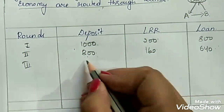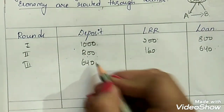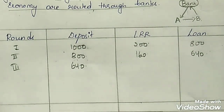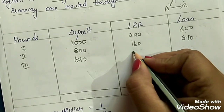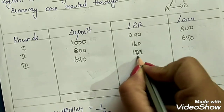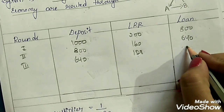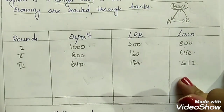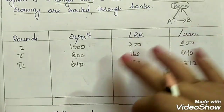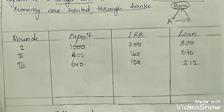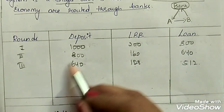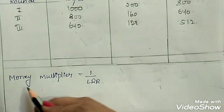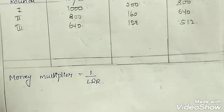In Round 3, the bank has deposits of rupees 640. Again, 20% of 640 is rupees 128. Deducting 128 from 640 gives rupees 512, which can again be lent. This is the process of money creation, and the question is: up to how many times can the bank continue this process? To understand this, we use the concept called money multiplier.